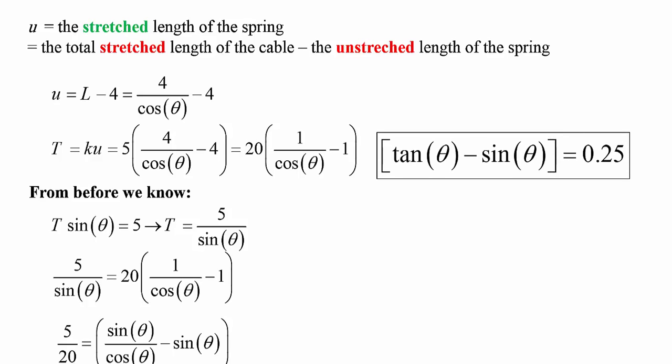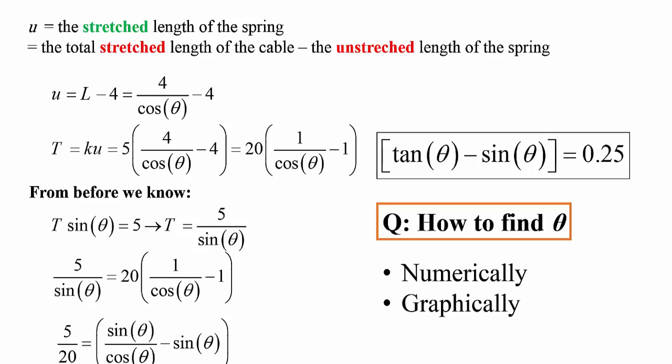After simplification, we get the equation: tan theta − sine theta = 0.25. Can you solve this directly? You can guess angles like 45, 50, or 60 degrees and substitute back, trying to get close to 0.25. My strategy is to solve this numerically in Microsoft Excel, then graphically and with a solver in Mathematica.